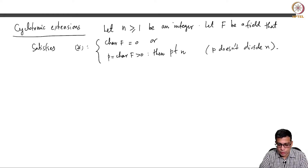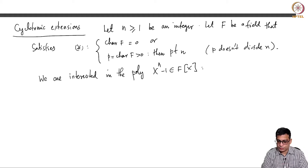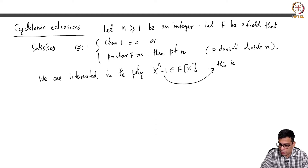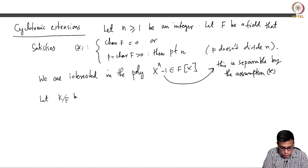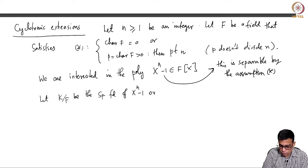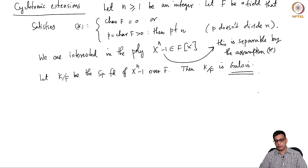This is a standard assumption. In this case we are interested in the polynomial x^n − 1. By assumption this is separable, meaning that this polynomial and its derivative have no common roots — this is assumption star. Let K be the splitting field of x^n − 1; then K over F is Galois. Our goal is to understand what kind of Galois group it can have. It can very well be non-cyclic, but we will show that it has to be abelian always.